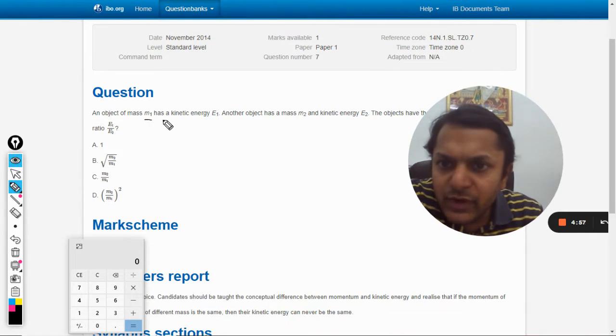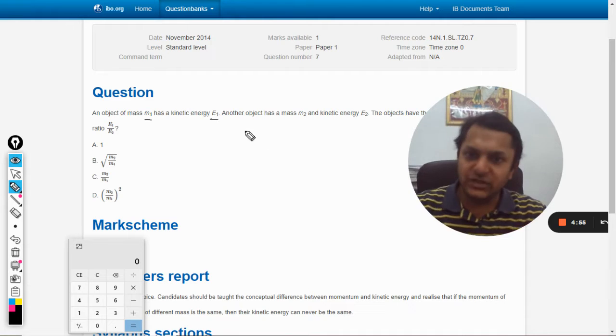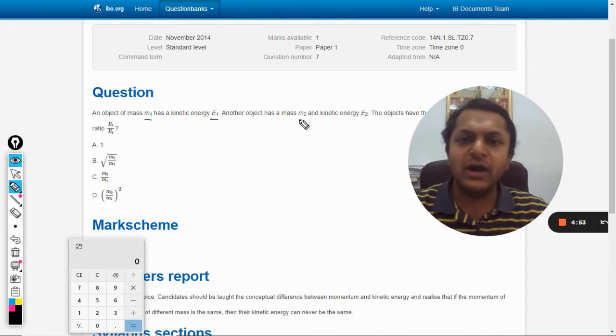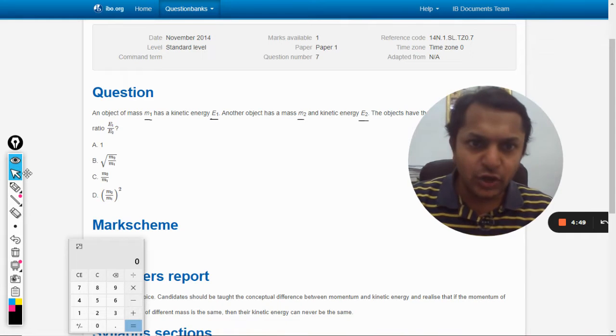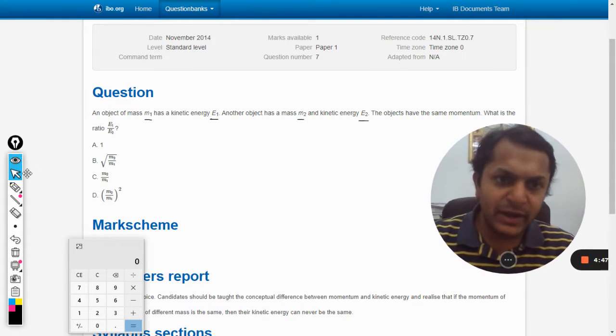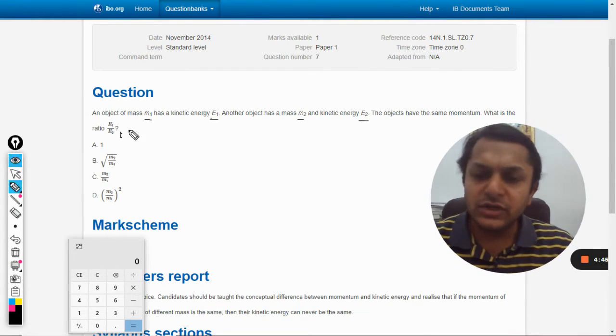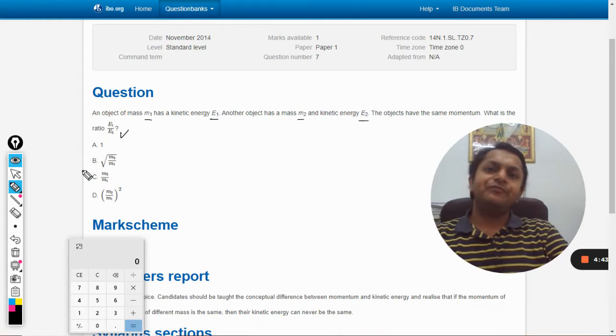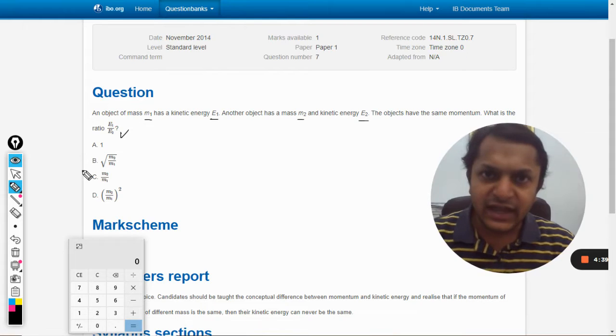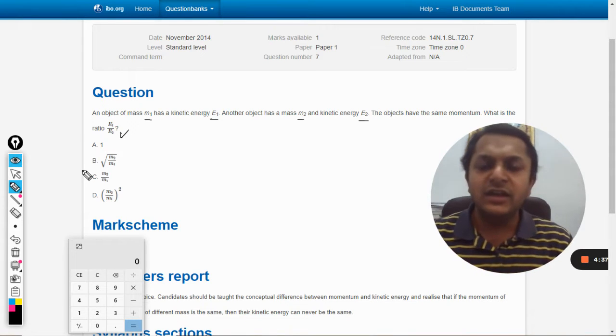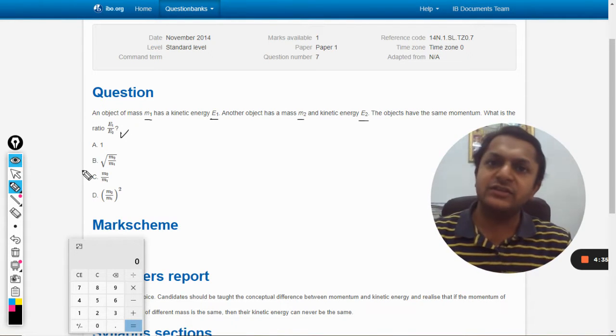An object of mass m1 has kinetic energy e1. Another object of mass m2 has kinetic energy e2, and the objects have the same momentum. What is the ratio e1 to e2? This is a very important question, and this question times and again occurs in our examinations and tests.